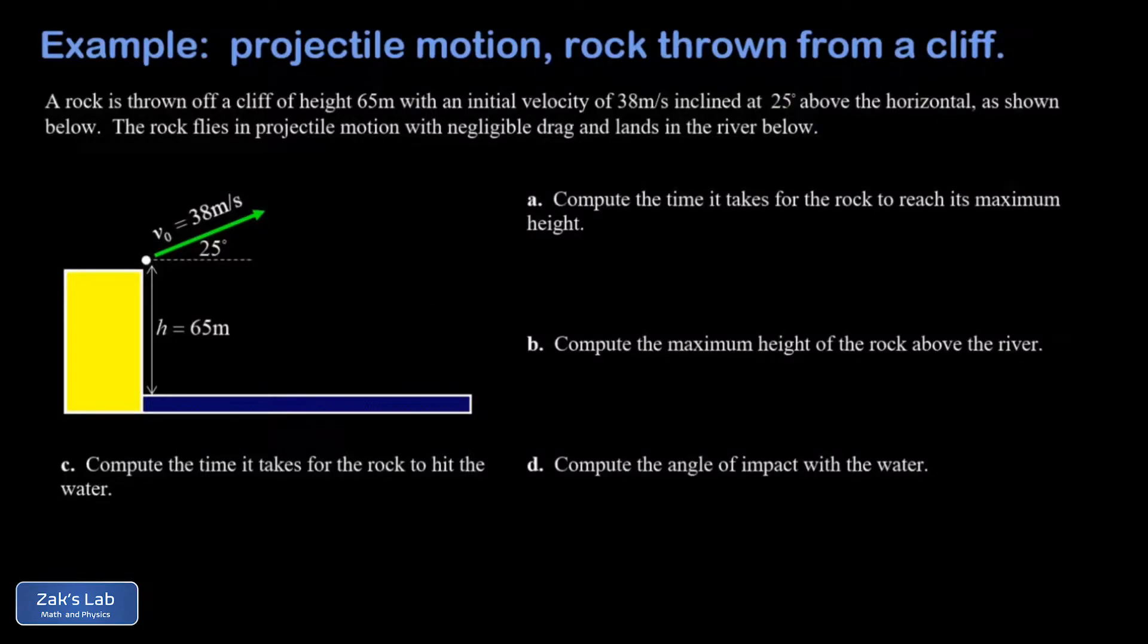In this video we're studying a projectile launch from the top of a cliff. We have a rock thrown from the top of the cliff with a speed of 38 meters per second at an angle of incline of 25 degrees. The height of the cliff is 65 meters, and this rock is eventually going to land in the river down below.